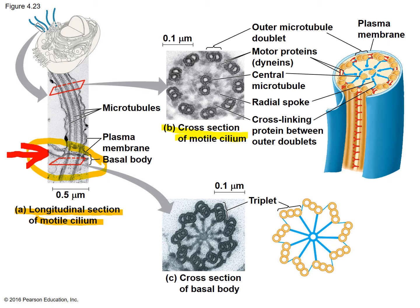Image C shows a cross section of the basal body via scanning electron microscope, and this one is in a triplet configuration — nine groups of three, making it a nine-plus-zero configuration. Up at image B, that's the nine-plus-two configuration. This nine-plus-zero vs. nine-plus-two distinction came up as a question on a dynamic study module, though I can't think of any reason why I would put it on a test — it's kind of just a factoid.